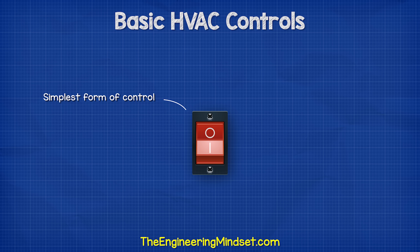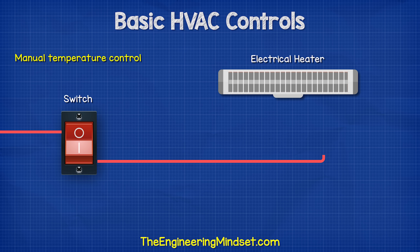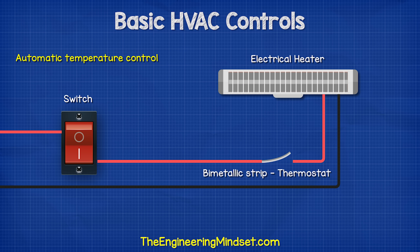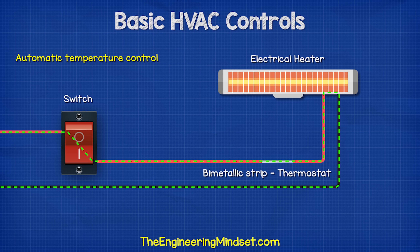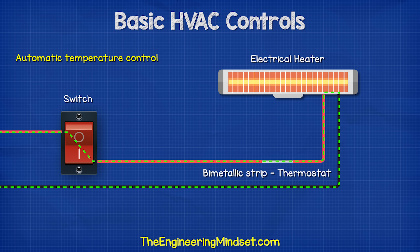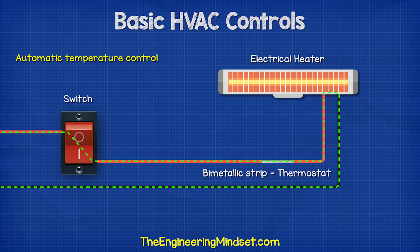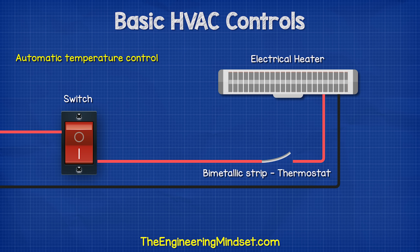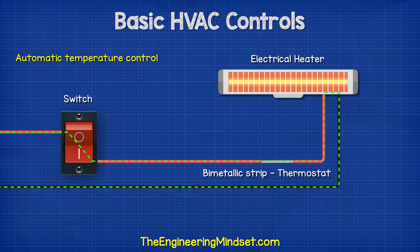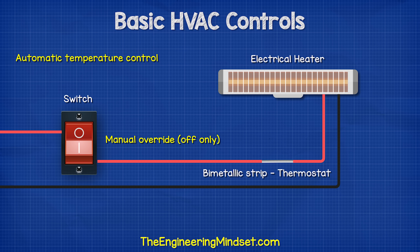The simplest form of control is an on-off switch. For example, to control the heat output from an electrical heater, we can manually switch it on or off. We could automate this, for example, with a bimetallic strip which acts as a thermostat. The strip bends as it warms up, and at a certain temperature it will bend enough to disconnect the circuit and turn the heater off. As it cools down, it completes the circuit again and the heating turns on automatically. We usually connect a manual switch with a thermostat so that a user can override the heating if they are too hot.